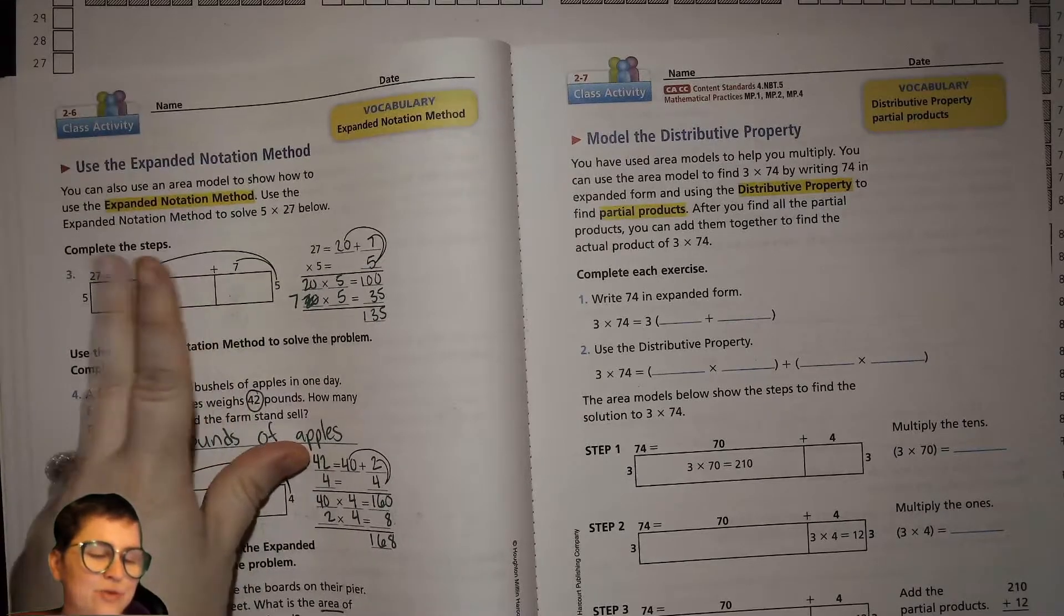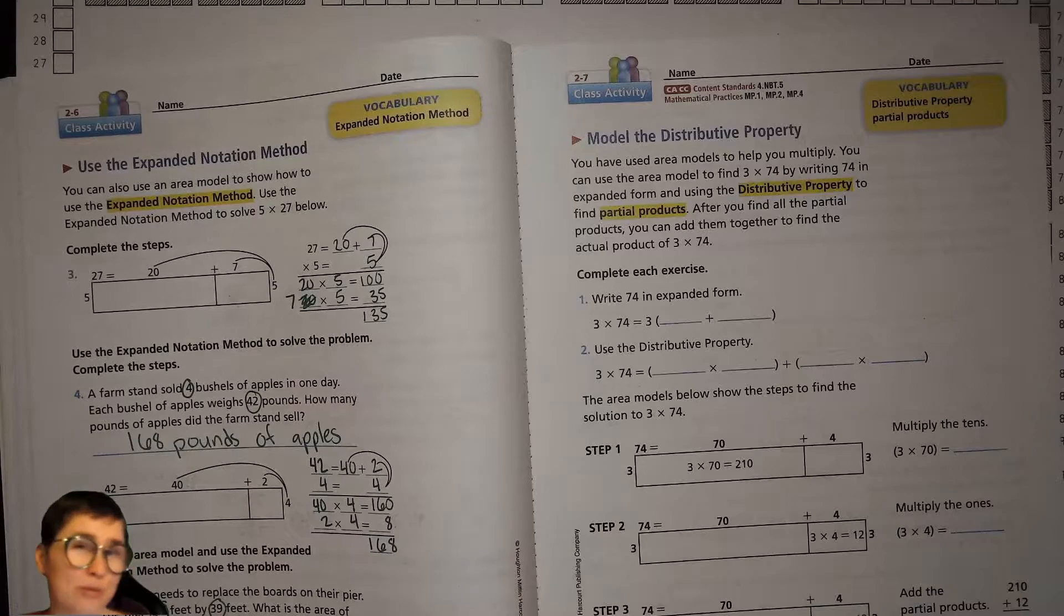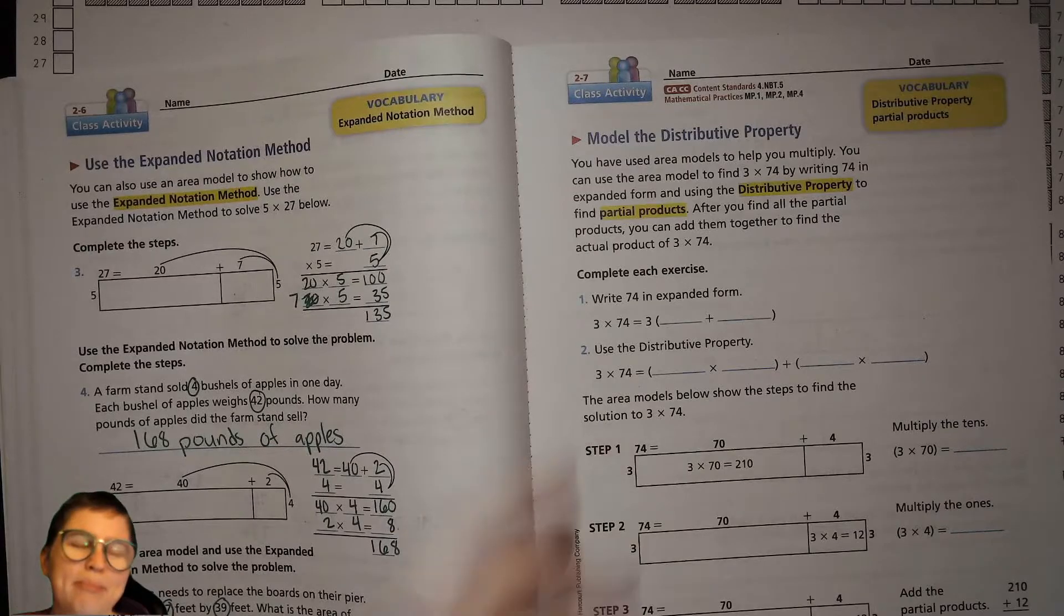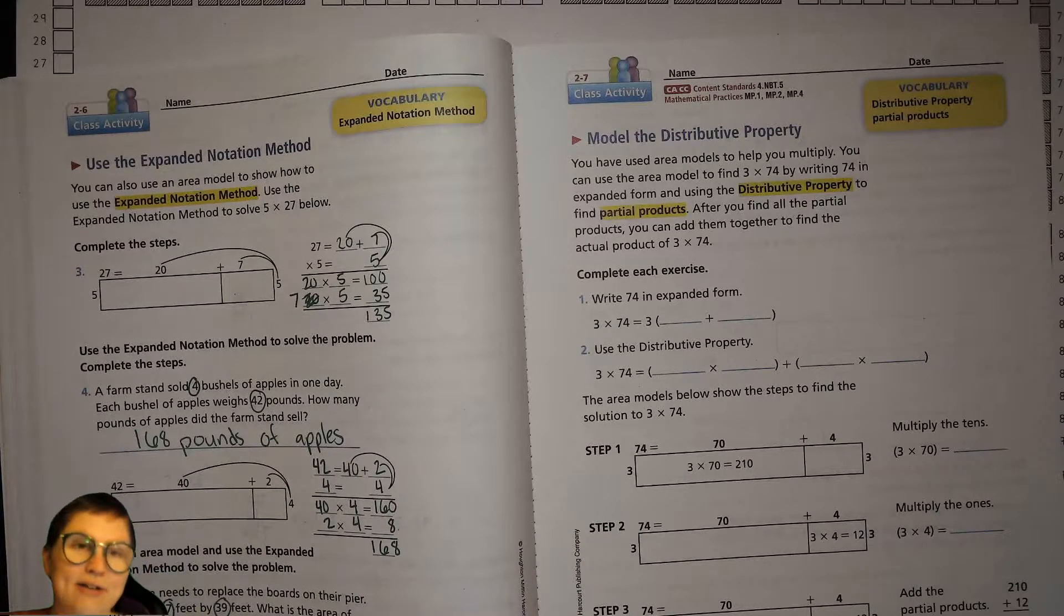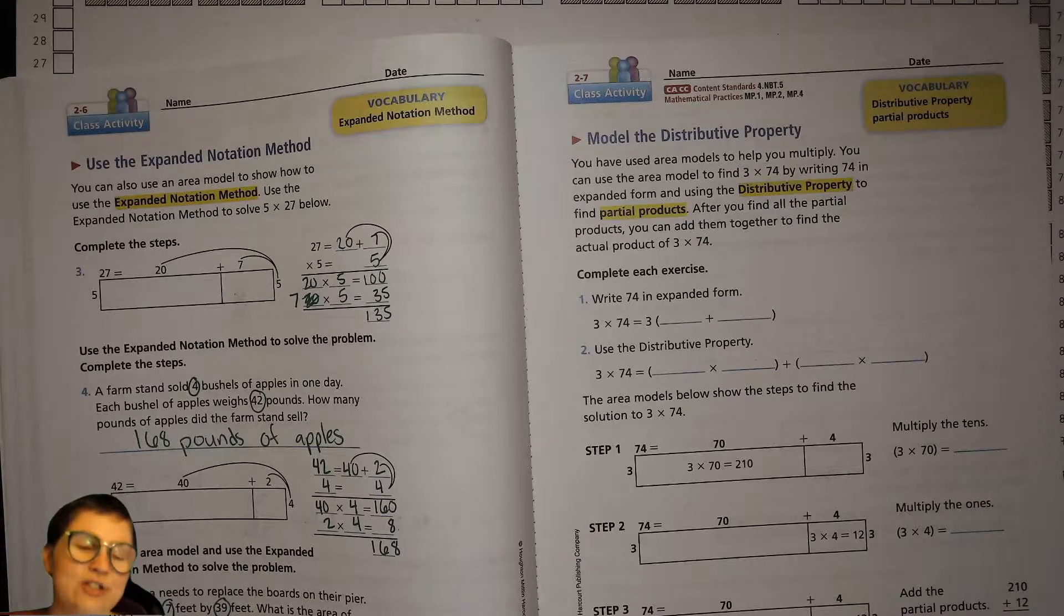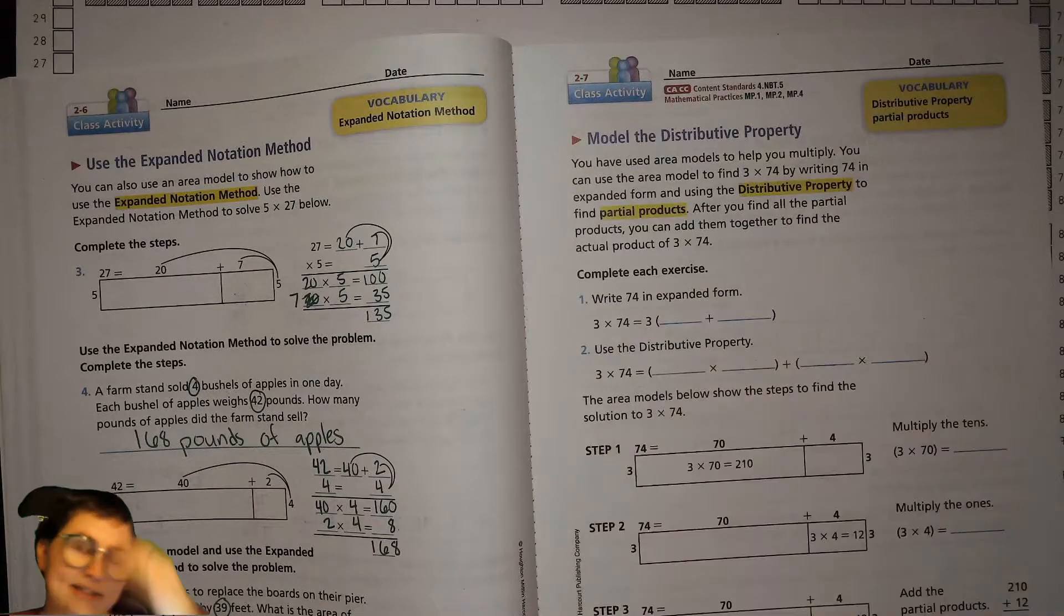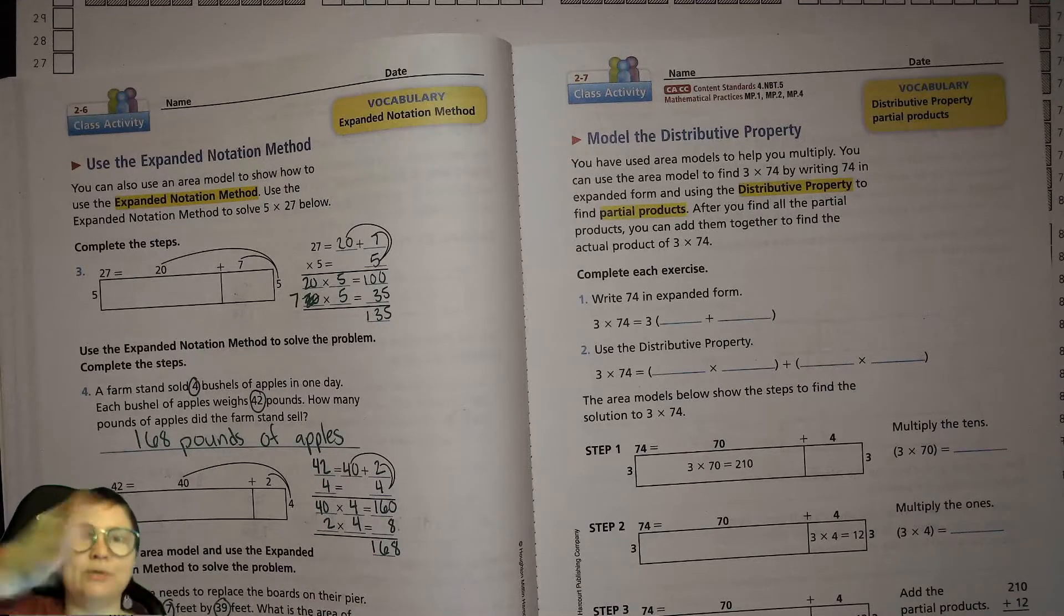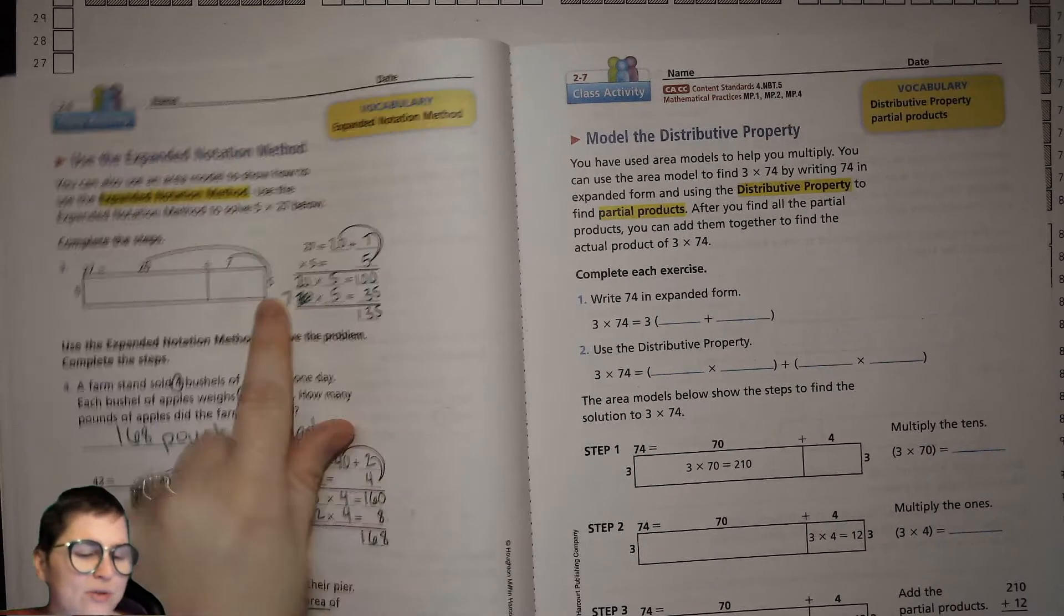When you're breaking up say the 27 into 20 and 7, you are distributing or kind of like handing out. The word distribute means to pass out or hand out, like if your teacher's passing out a bunch of watercolor paint sets to the whole class, she or he is giving one to each and every kid in the class.